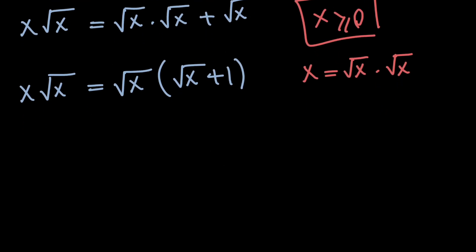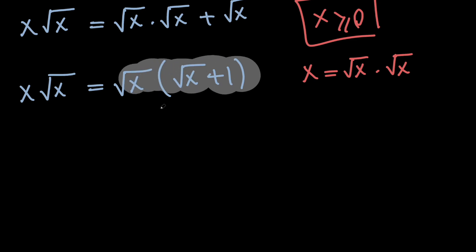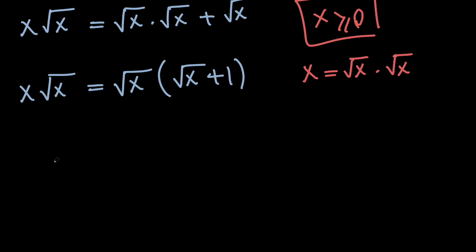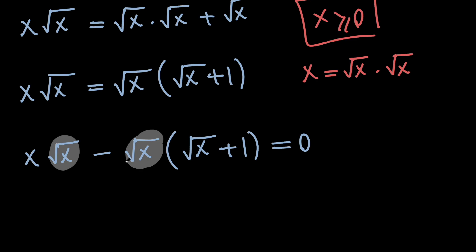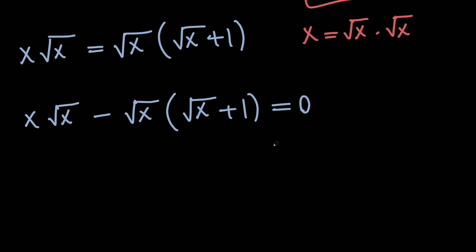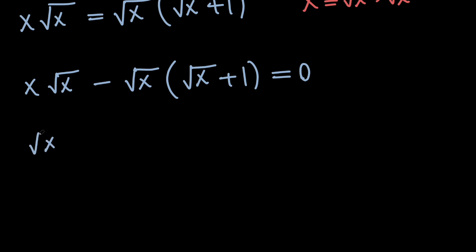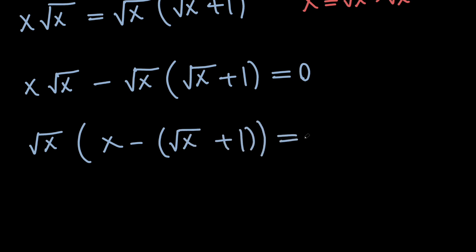Next, let's go ahead and move the expression on the right-hand side to the left-hand side to have everything on the same side. So we're going to have x times the square root of x minus the square root of x times the quantity (root x plus 1) equals 0. Now, the square root of x is our common factor on the left-hand side, so we can pull it out. If we do so, we get root x times the quantity x minus (root x plus 1) equals 0.